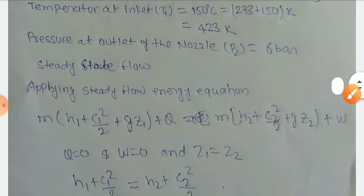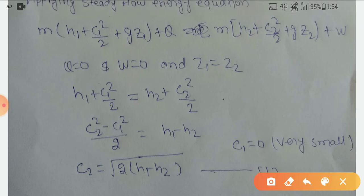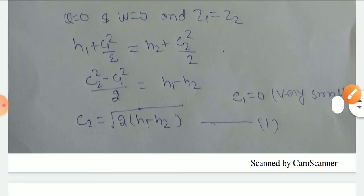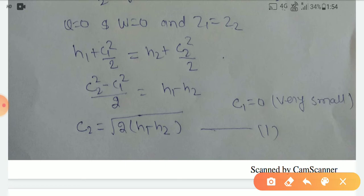So finally we write: H1 + C1²/2 = H2 + C2²/2. Simplifying, H1 - H2 = (C2² - C1²)/2. C1 is very small, so it's negligible. Therefore, C2 = √(2(H1 - H2)).